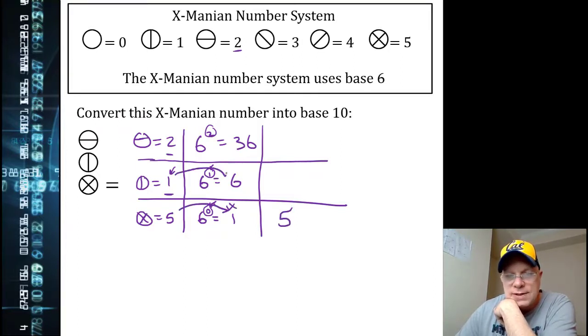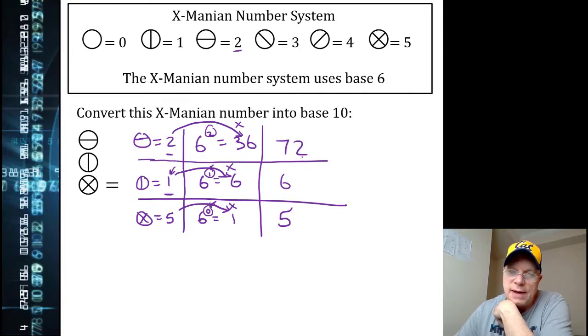So I have five ones. Five times one is five. And I have one six. One times six is six. And I have two thirty-sixes, which would be seventy-two. And when you add all those up, you see that we have a base 10 value of 83.